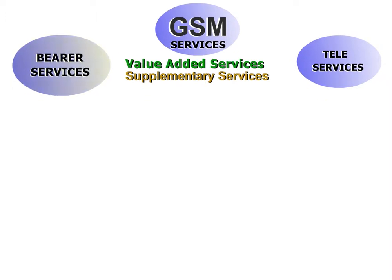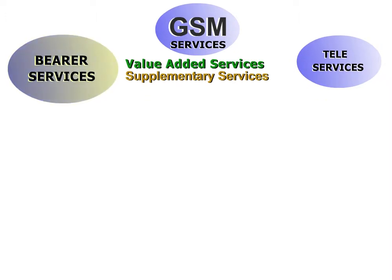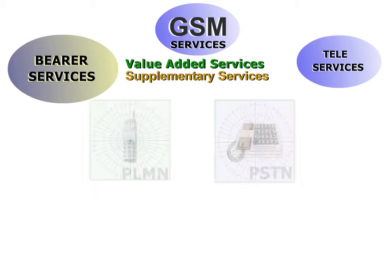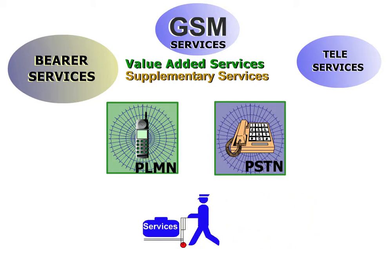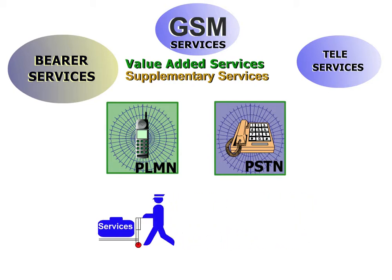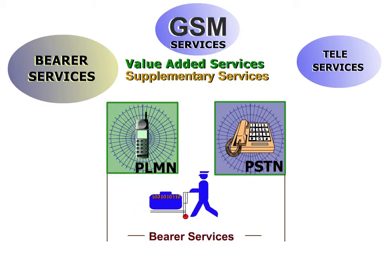The bearer services are telecommunication services that guarantee the transmission of signals between access points in telecommunication networks. They are used exclusively for transport and define the services a network can offer. For example, data transmission between a corporate network and a mobile notebook, or data download from the web.